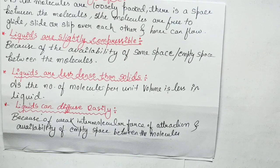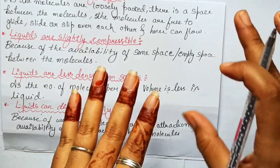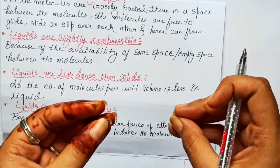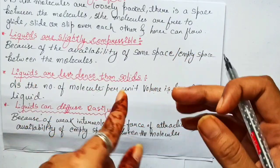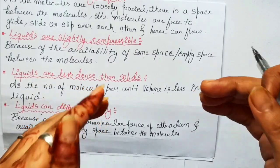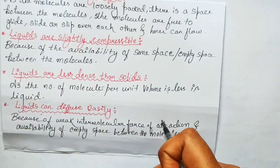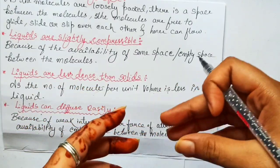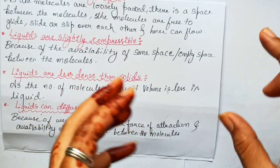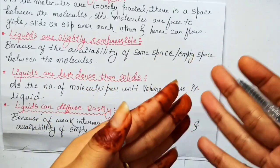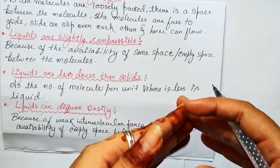Next point: liquids are less dense than solids. That means if we compare solid and liquid, we get more density from solid and less density from liquid. Density — you can think of it simply for now.